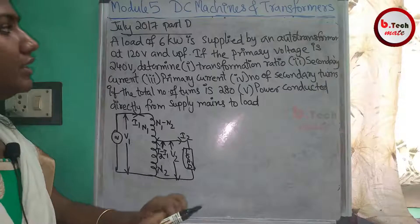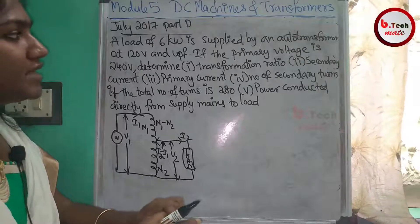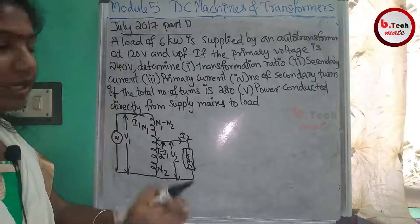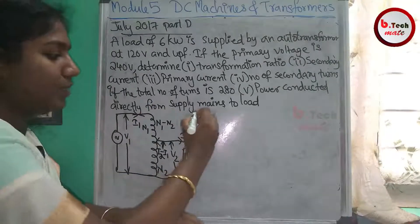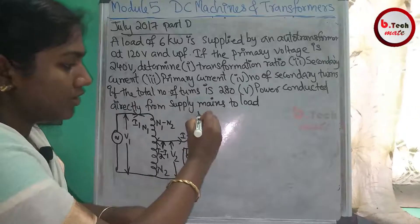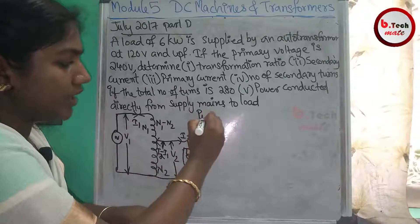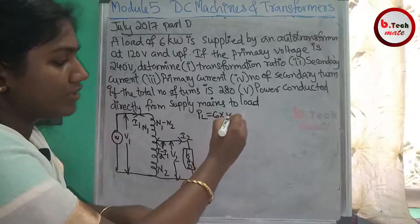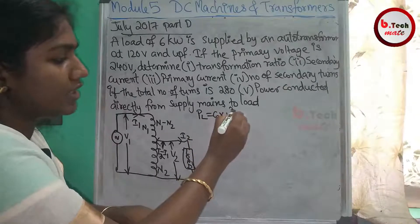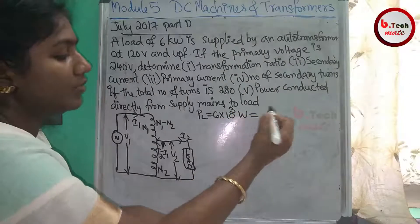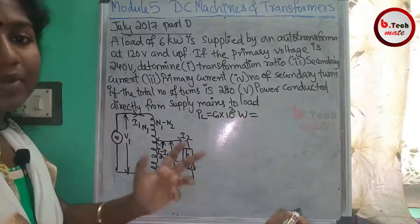Now, the load output power is 6 kW, which is 6,000 Watts.